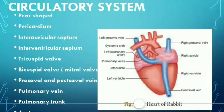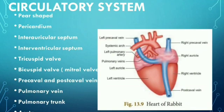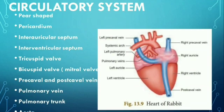Circulatory system of rabbit. The circulatory system of rabbit includes blood, blood vessels, and heart. The heart is spear-shaped and is present in the thoracic cavity.